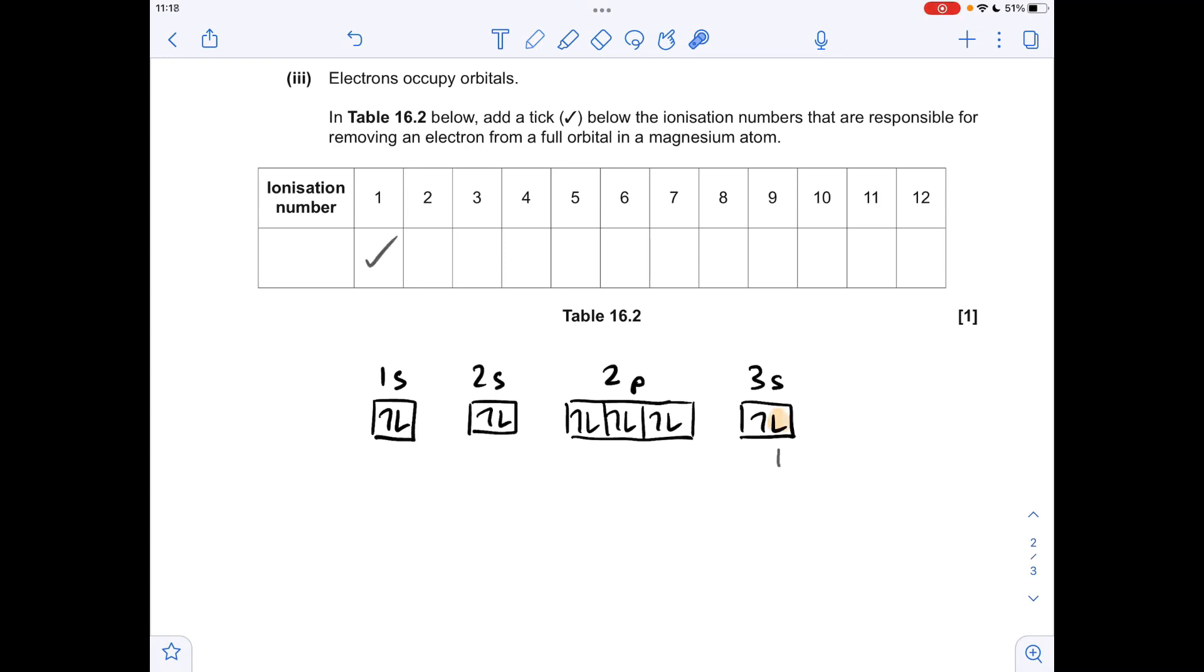The second ionization energy is going to be to take that one out. So that won't be full now. The third ionization energy is going to be to take one of these paired electrons out. So we'll just say that one there. That's a full orbital.